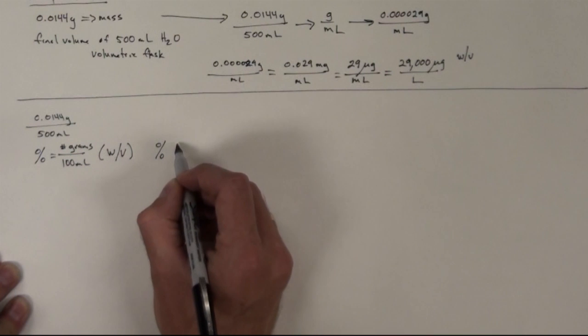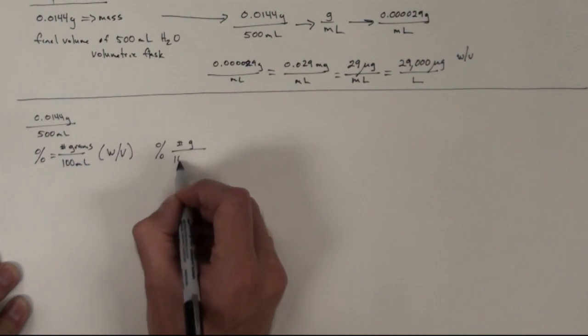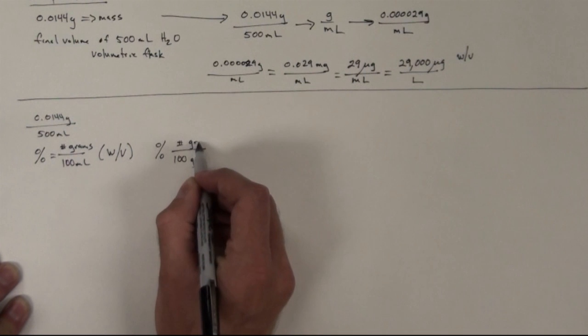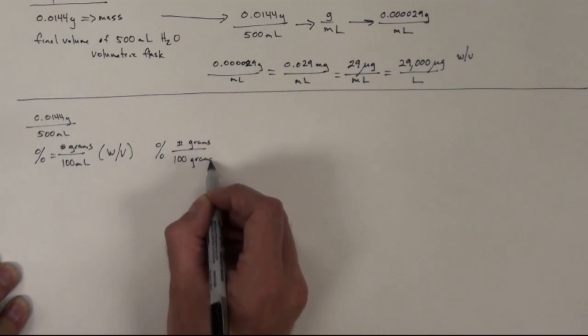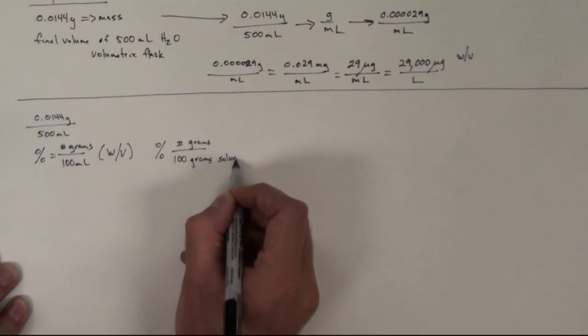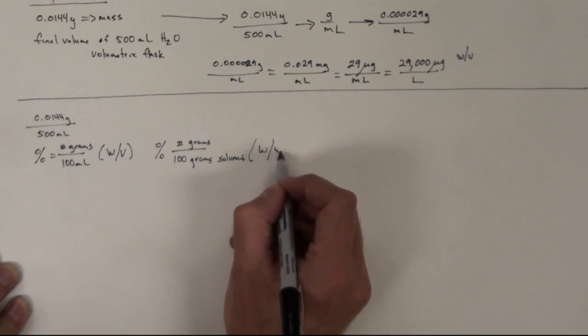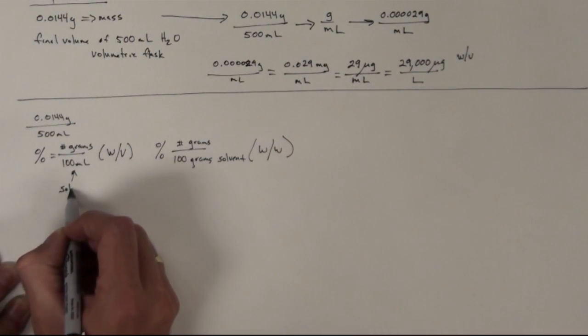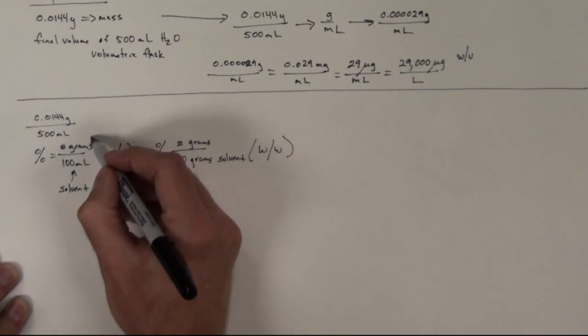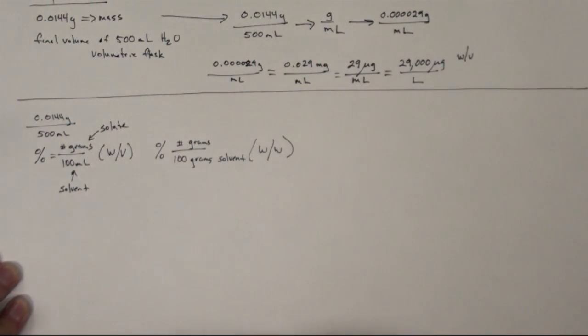Percentage can also be number of grams per 100 grams of solvent. That would be a weight weight percentage. This bottom number here is going to refer to the solvent. The top number is going to refer to the solute, or what you're dissolving or putting into that solvent.